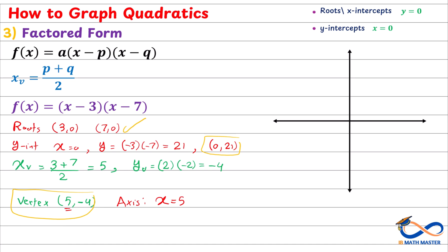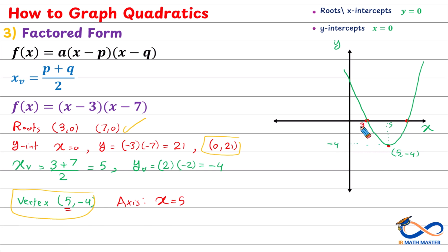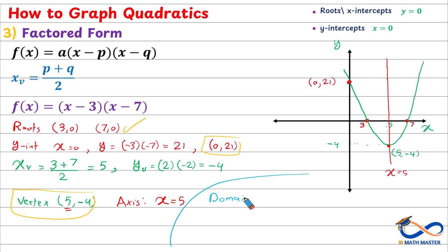Now we will plot these points on the graph. The two roots are at (3, 0) and (7, 0). The vertex is (5, negative 4), exactly in the middle between the roots. The axis of symmetry is x equals 5, and the y-intercept is (0, 21). The domain will be all real numbers, from negative infinity to infinity. For the range, since the vertex is a minimum point at negative 4, y will be negative 4 or greater, so the range is y greater than or equal to negative 4.